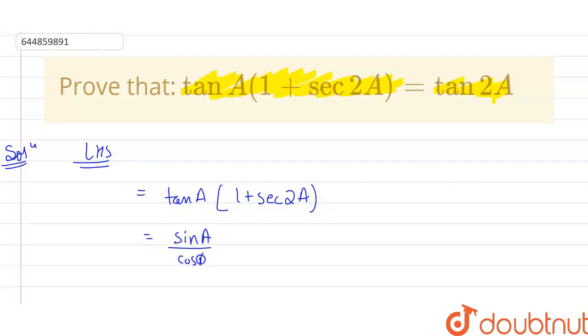So sin A by cos A in brackets (1 plus sec A can be written as 1 by cos). So this will be 1 upon cos of 2A, not A, cos of 2A.